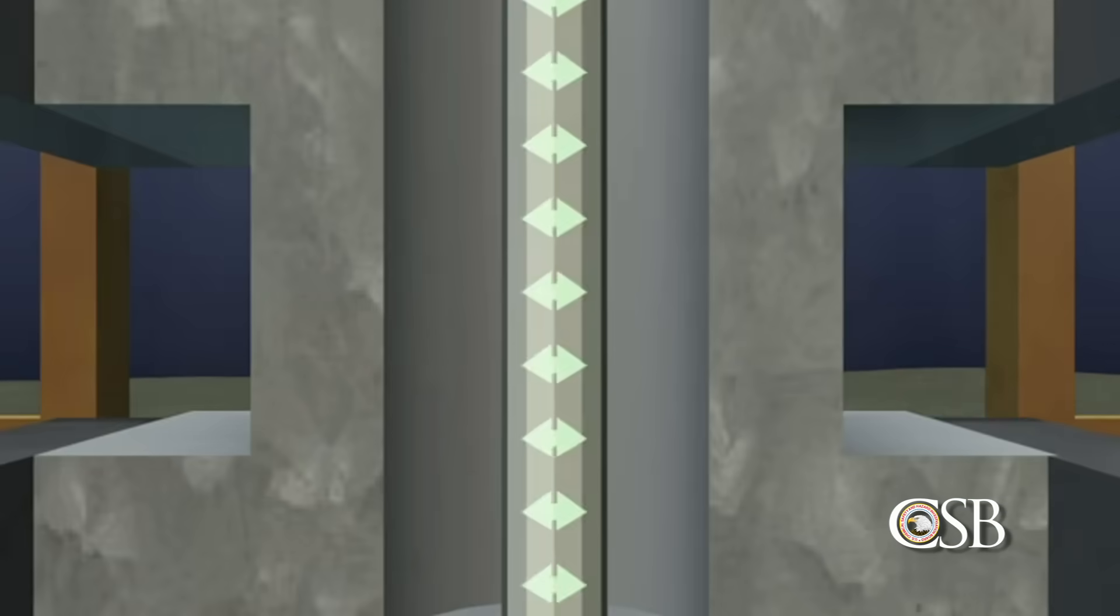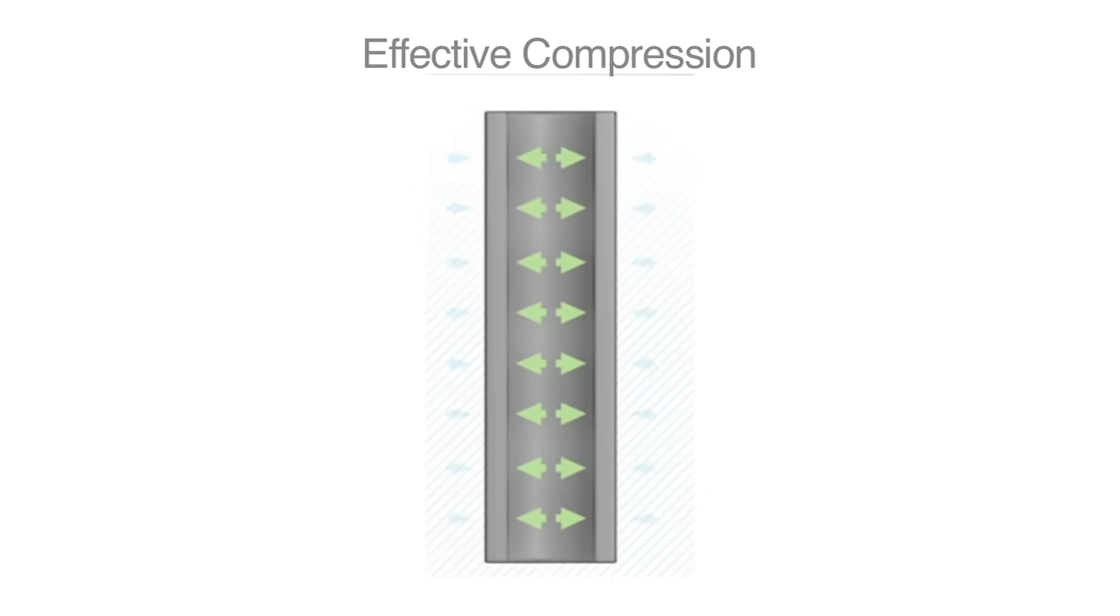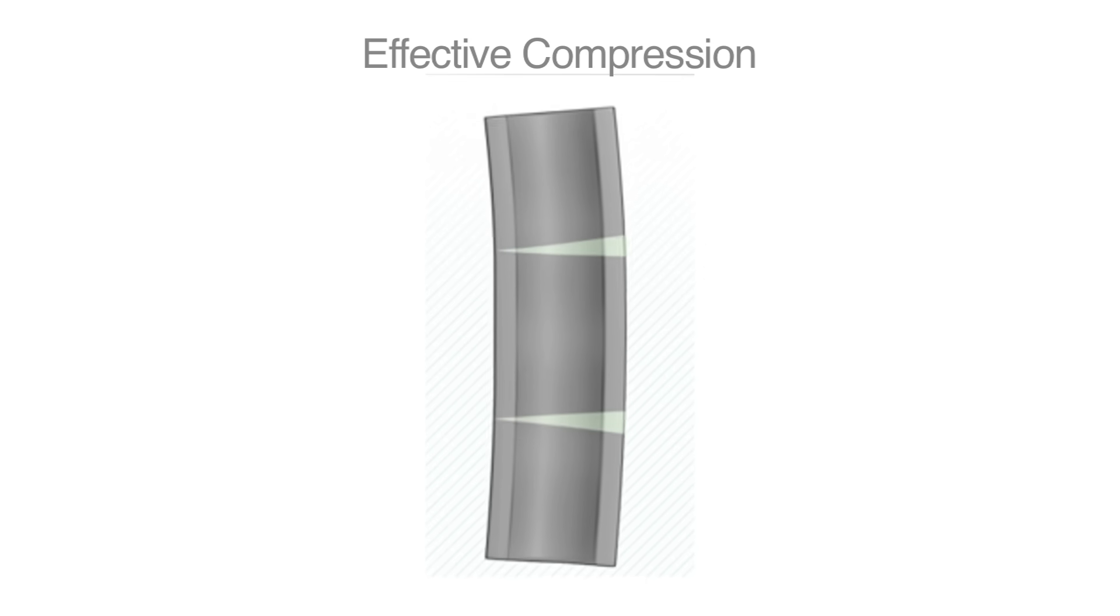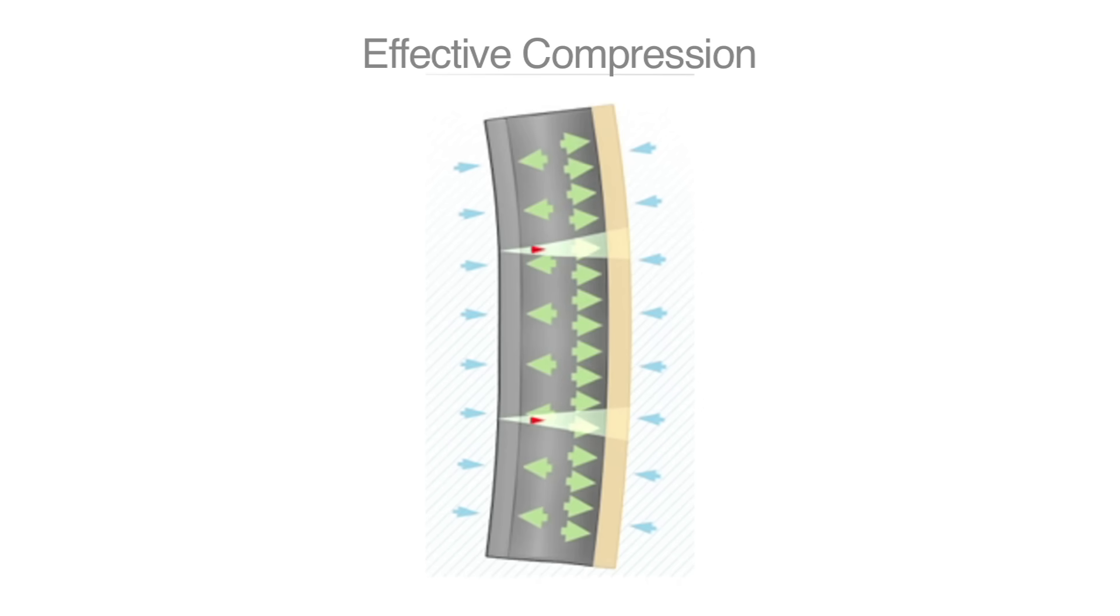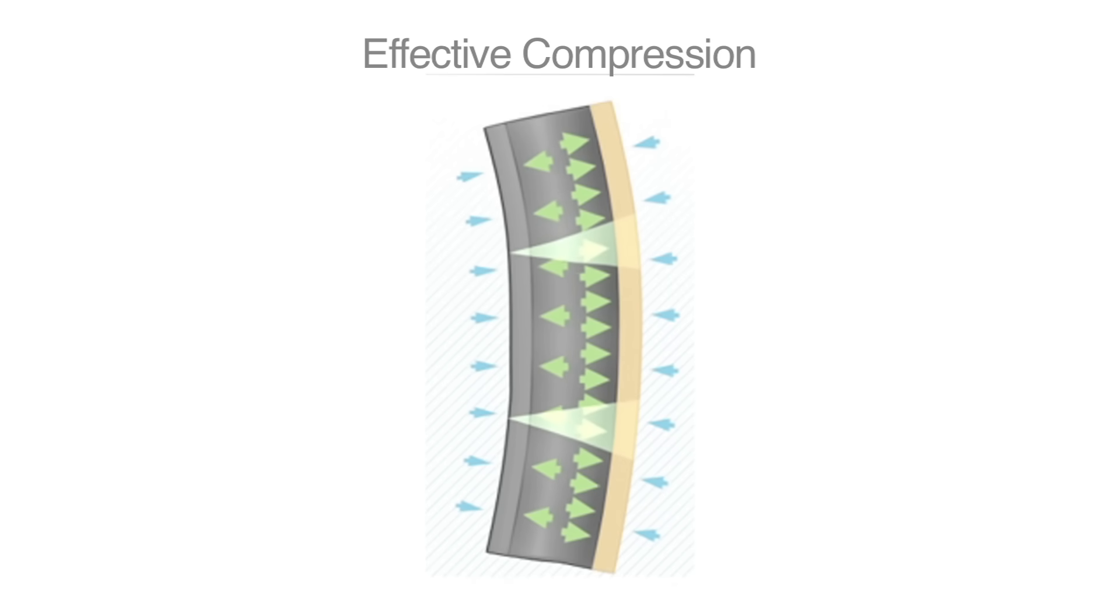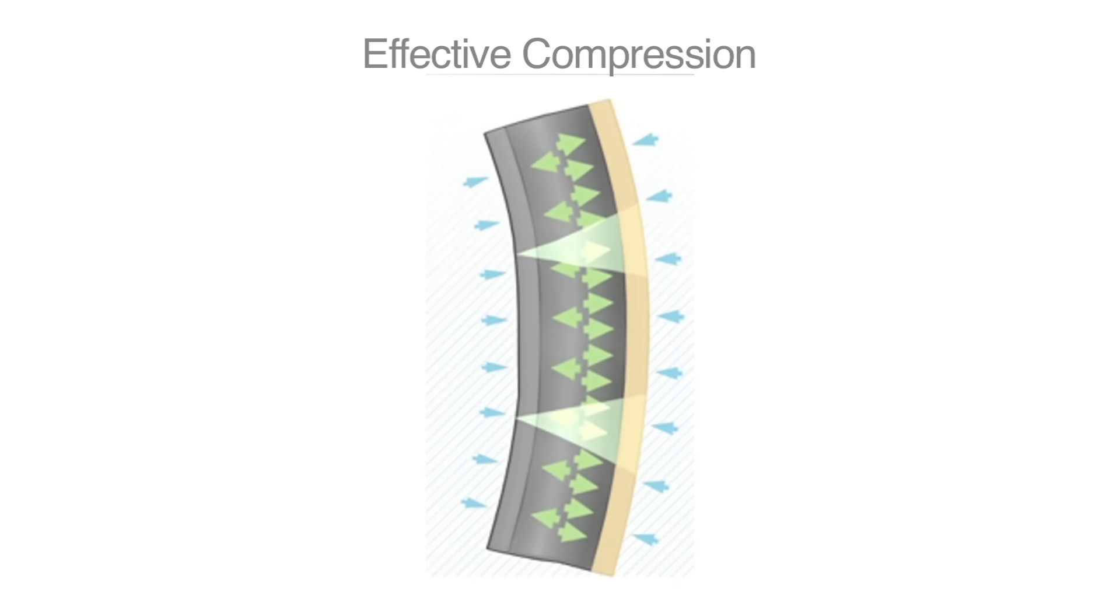During its investigation, the CSB identified a mechanism that likely caused the drill pipe to be buckled around the time of the explosion. This mechanism is called effective compression. Although effective compression had previously been noted as a hazard in other drilling operations, it had never been identified as a problem affecting drill pipe during well operations. Effective compression occurs because although pipe may appear to be perfectly straight, in fact, it has minute bends and irregularities, invisible to the naked eye. Along these bends, the side of the pipe that is curved outward is slightly longer and has more surface area than the other side. When there is a large difference in pressure between the inside and outside of the pipe, as happened on April 20, 2010, the longer side of the pipe experiences a larger bending force. Eventually, this force can become great enough to buckle even heavy pipe.